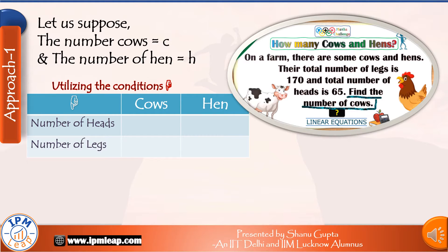Each animal has only one head, so the total number of heads for all the cows is the same as the number of cows, that is c. And the total number of heads for all the hens is the same as the number of hens, that is h. Talking about the number of legs, each cow has four legs, so the total number of legs of all cows is four times the number of cows, that is 4c. Each hen has only two legs, so the total number of legs of all hens is two times the number of hens, that is 2h.